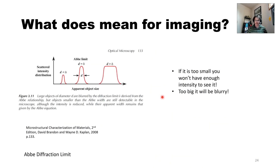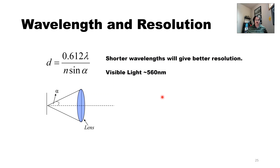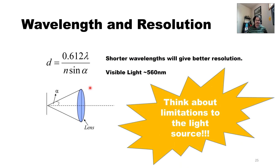Shorter wavelengths give better resolution - this becomes extremely apparent when comparing SEM to optical microscopy. Visible light is in the range of 560 nanometers. You could get higher resolution using UV light - my little cell phone microscope even had a UV black light option. However, there are limitations: UV can be a health hazard and potentially damaging to your eyes, and too energetic a light source can actually damage your sample.